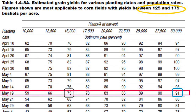Once you know what your stand is in the field, you want to find out what the yield potential is right there. This table you're seeing here is taken from Penn State, Illinois University, and Purdue University. Basically what it is showing is the yield potential between 125 and 175 bushels per acre. For example, a grower who planted at 30,000 plants per acre on May 19th would normally have 91% yield potential just because he planted late.